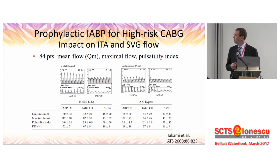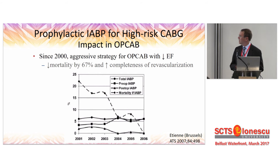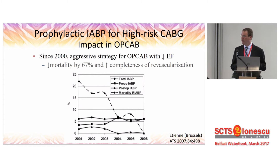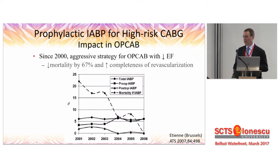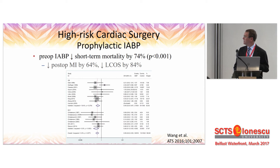Not only did it improve output, the balloon pump also improved graft flow, measuring flow in both the ITA on the left and the saphenous vein on the right. There was a substantial increase in mean flow, maximal flow, and pulsatility index, demonstrating it not only improved cardiac output but flow to the grafts to maintain patency. Curry's group from Brussels looked at placing intra-aortic balloon pumps preoperatively in off-pump CABG patients with diminished left ventricular ejection fraction, and they were able to decrease mortality by 67% and increase completeness of revascularization. Back to that meta-analysis — the odds ratio for mortality was 0.18 with a preoperative intra-aortic balloon pump, and there was a dramatic decrease in low cardiac output syndrome and postoperative MI.